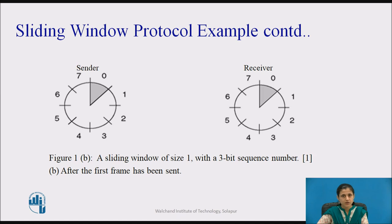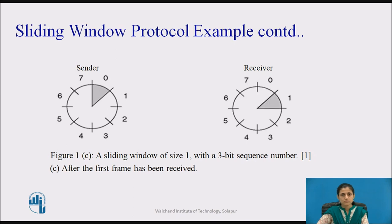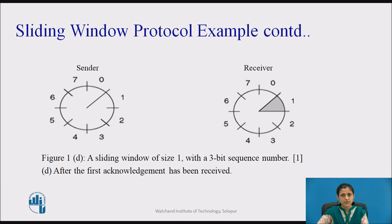Figure 1b shows that the first frame has been sent; the sending window points to sequence number 0 because it is waiting for an acknowledgement. The receiving window points to sequence number 0 because it is waiting for a frame with sequence number 0. Figure 1c shows that after the first frame has been received, the receiver window is rotated by 1 and points to sequence number 1, while the sending window still points to sequence number 0, awaiting acknowledgement. Figure 1d shows the picture after the first acknowledgement has been received — the sending window is rotated and the receiving window points to sequence number 1.